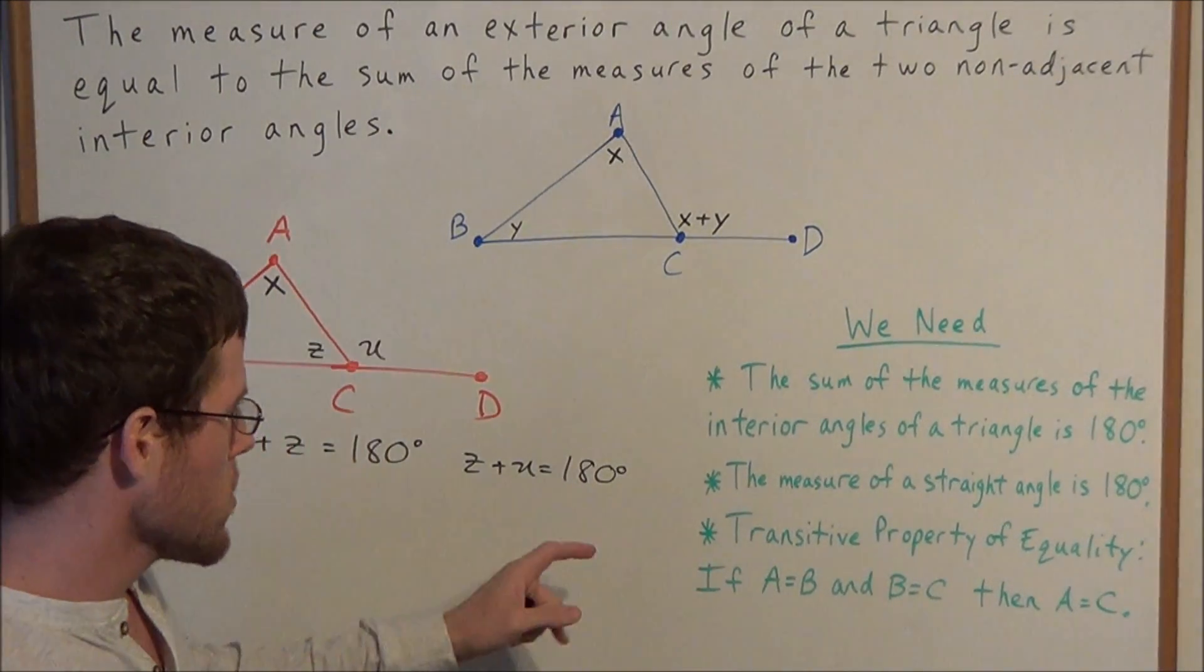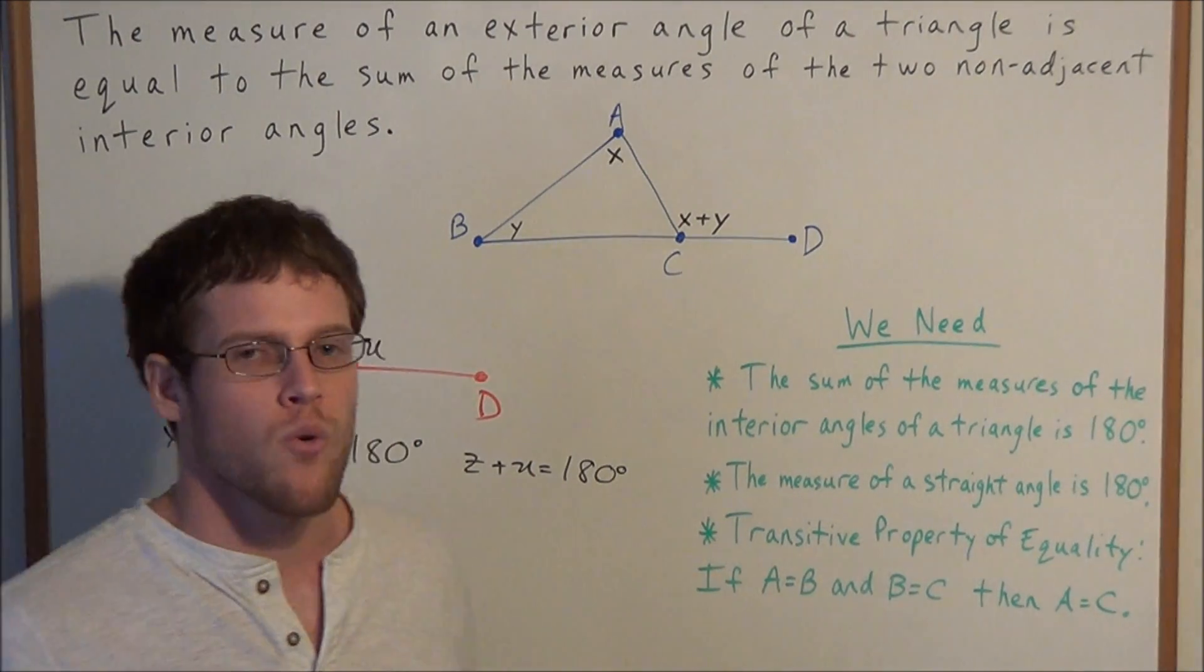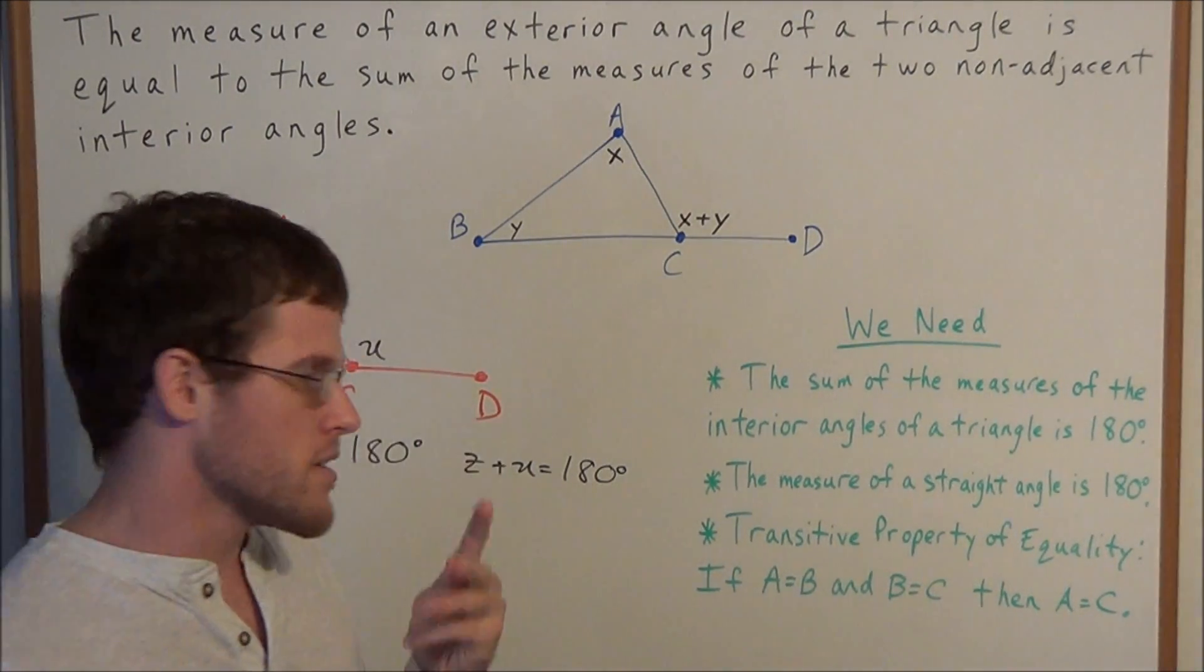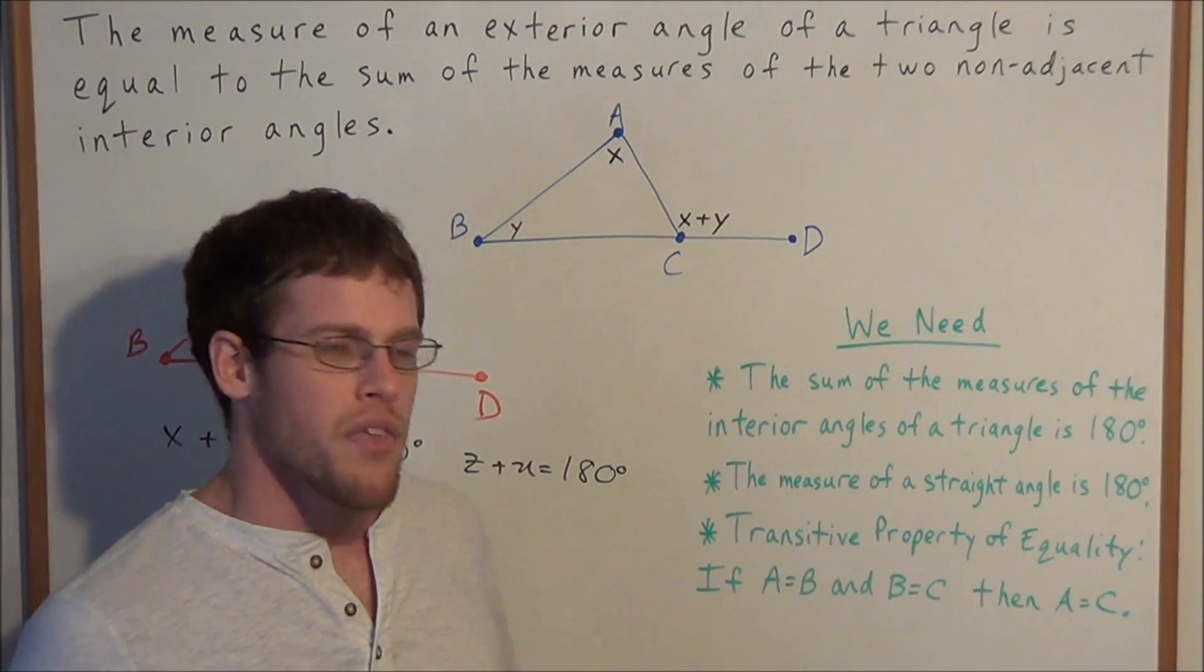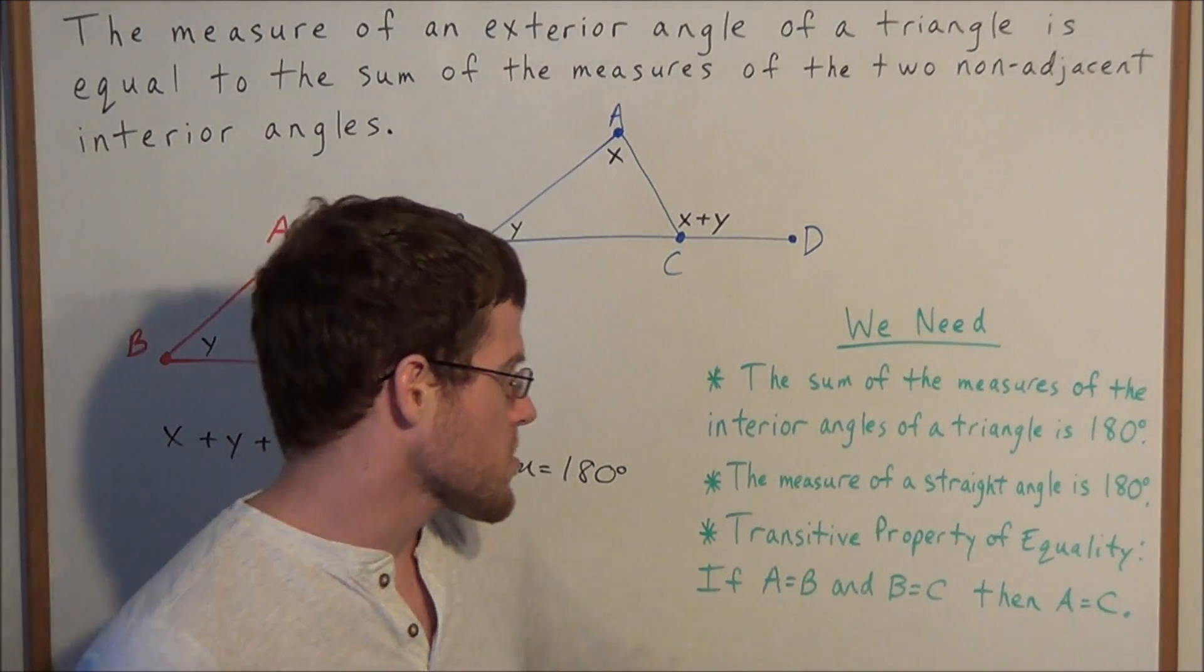Now, the transitive property of equality states when we have three quantities, in this case we have A equal to B and B equal to C, that implies that A equals C.